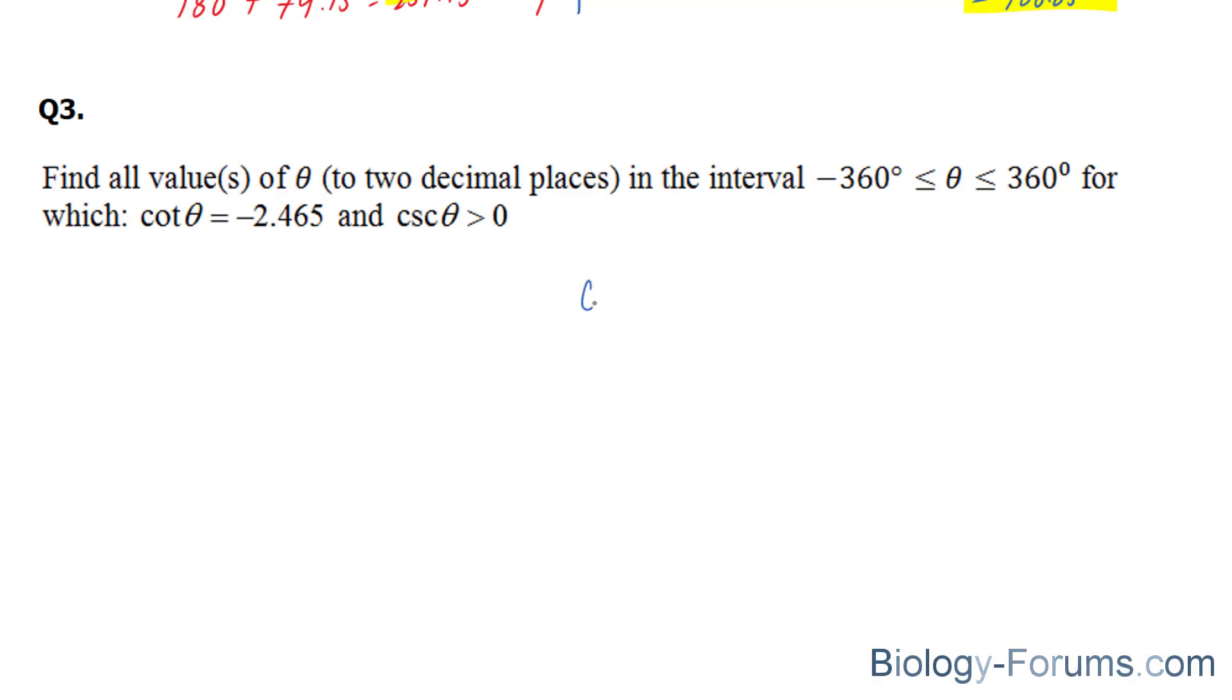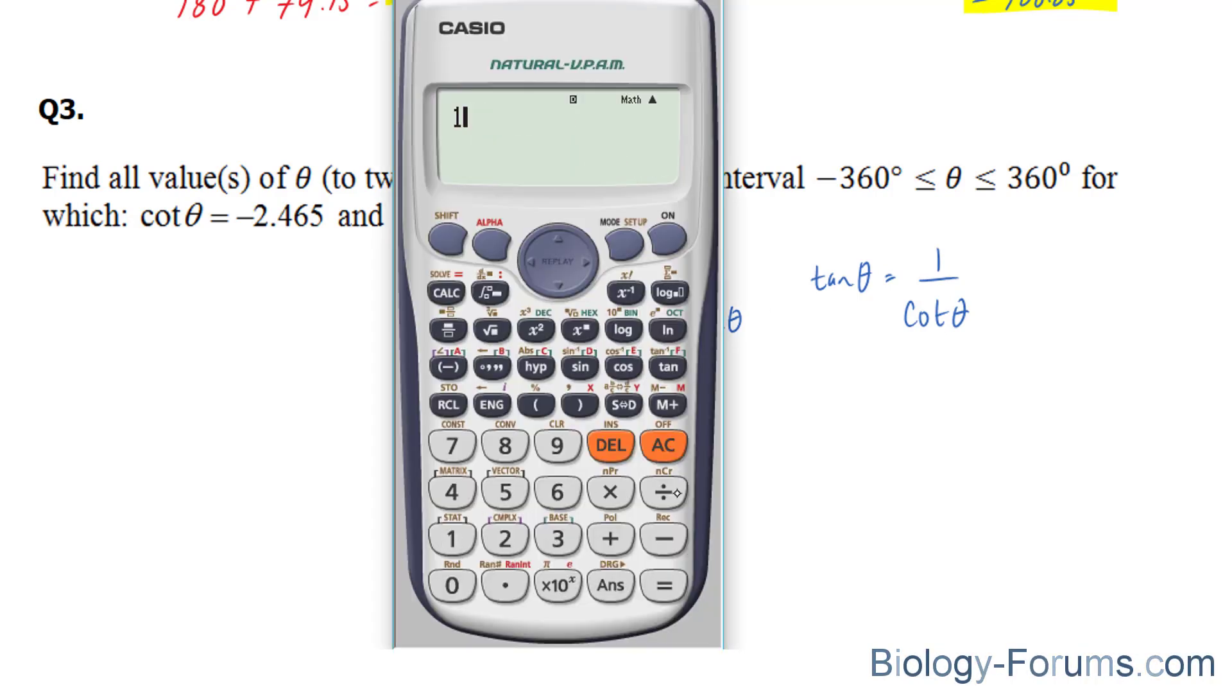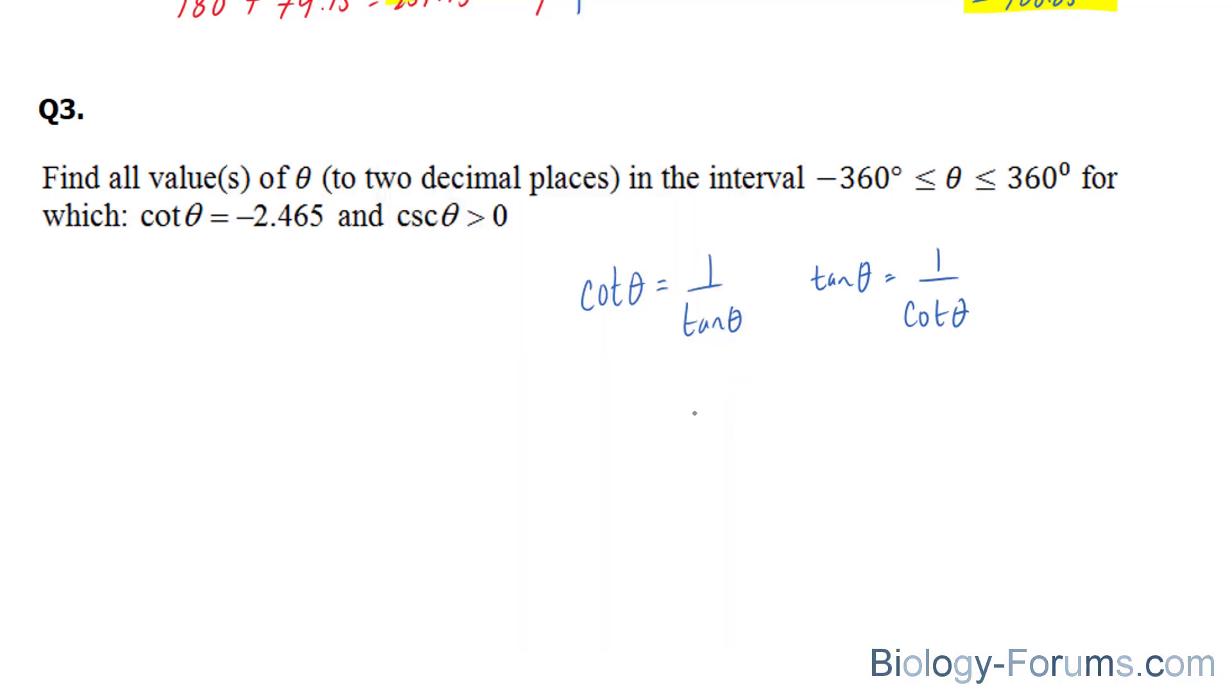Let's start by defining cotangent. Cotangent is 1 over tangent, or tangent theta equals 1 over cotangent theta. So let's use the tangent version as opposed to the cotangent version. And that's simple.